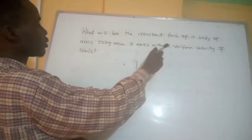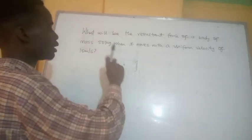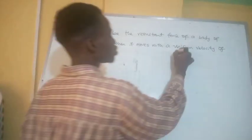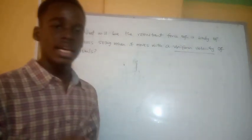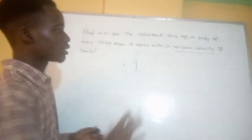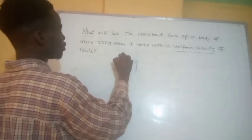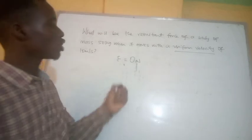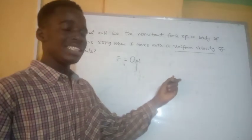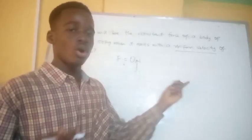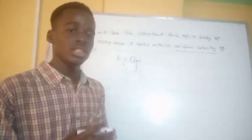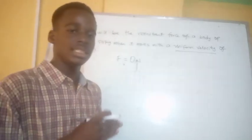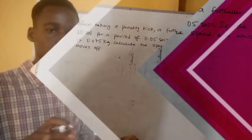A body will have a resultant force only when it moves from rest or changes its velocity. Looking at this question, we are asked for the resultant force of a body of mass 50 kg moving with a uniform velocity of 10 meters per second. Since it moves with uniform velocity, the resultant force is equal to zero.